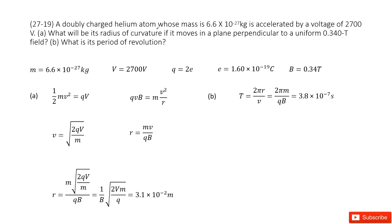So we have a doubly charged helium atom. This is a charged particle. The charge is 2 times e. This is double charged, 2 times e.